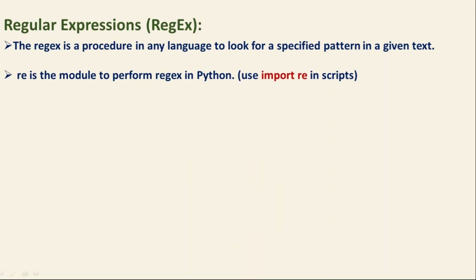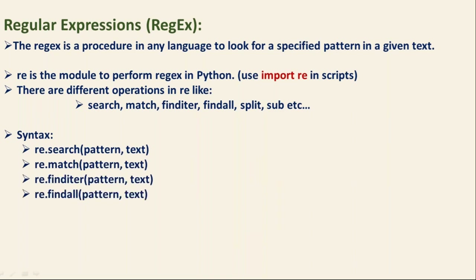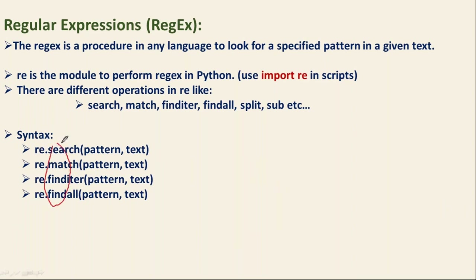In the re module, you have different types of operations. I'm going to show you some of them: match, finditer, findall, sub, split, and compile. As of now we are at a very beginning stage, so I'm going to show you simple syntaxes for match, finditer, and findall. All these operations are going to use something called a pattern. Before working with regular expression operations, first of all we should be good with the pattern — how to create a pattern and what are the rules to create it.